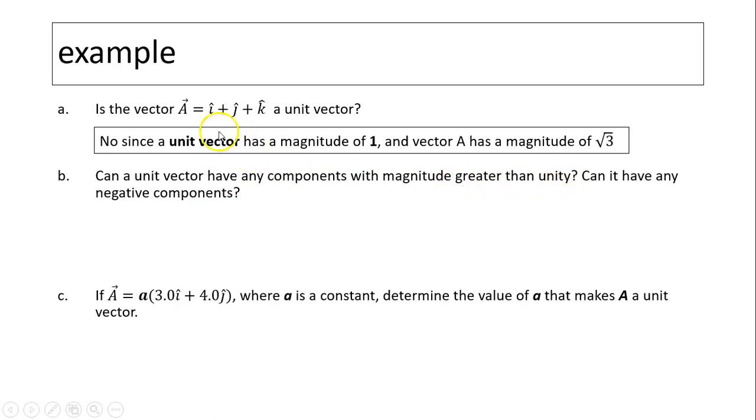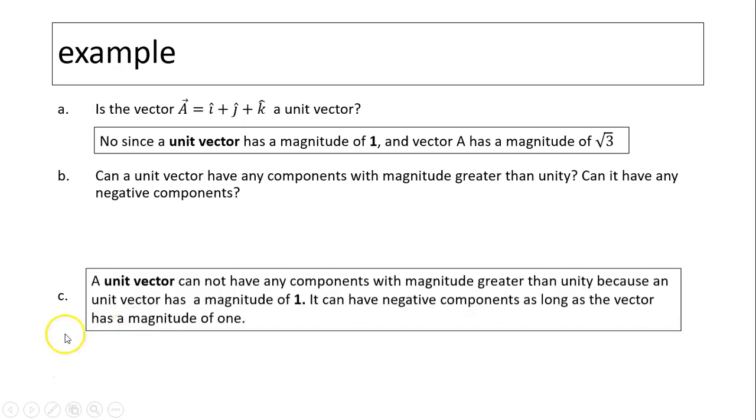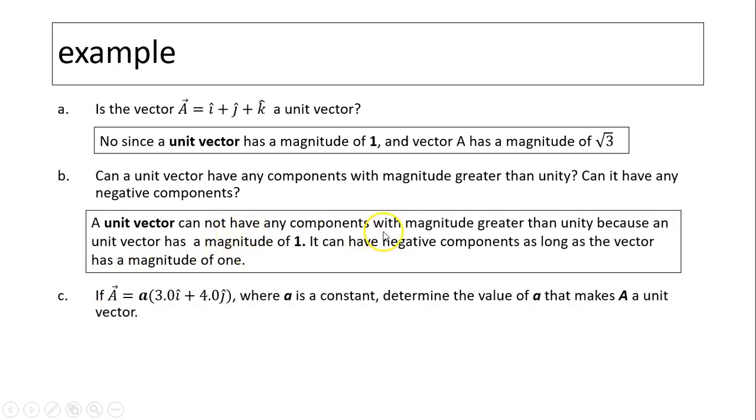Why is that? Because the magnitude equals, remember, ax squared plus ay squared plus az squared. If any of them is bigger than 1, then the magnitude has to be bigger than 1. So then that's not a unit vector. Can it have any negative components? The answer is yes. Even this one can be negative as long as it is small, so everything added together equals 1. A unit vector cannot have any components with a magnitude greater than unity because a unit vector has a magnitude of 1. It can have negative components as long as the resultant has a magnitude of 1.